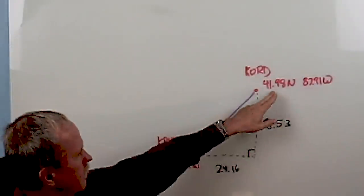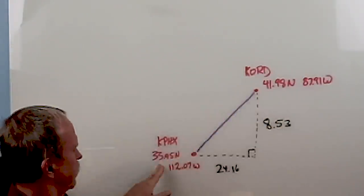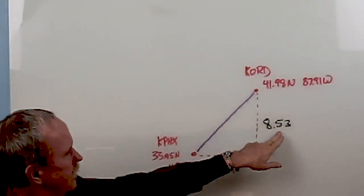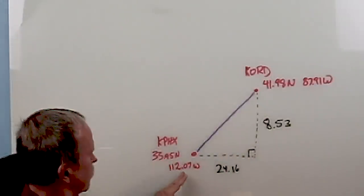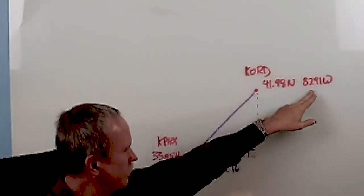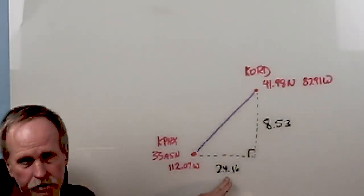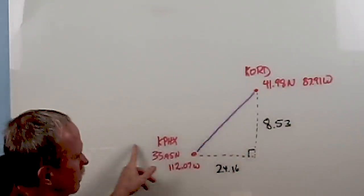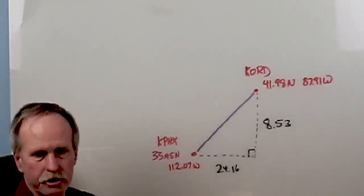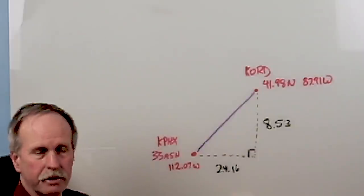So if you were to subtract the difference between that latitude and that latitude, you will come up with 8.53. If you were to find the difference between this longitude and that longitude, it would be 24.16 degrees. Now again, this is a right triangle. It would be longer than this. I just have it shortened up a little bit for illustration.